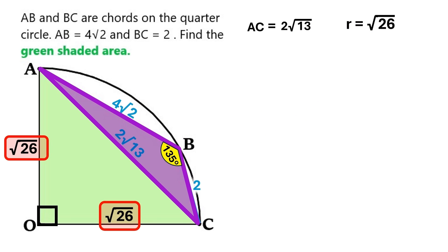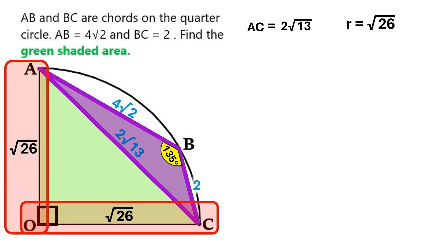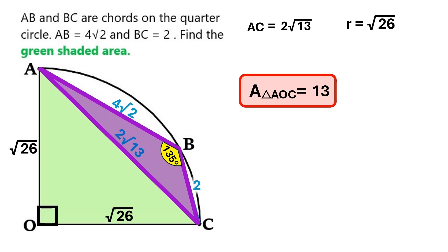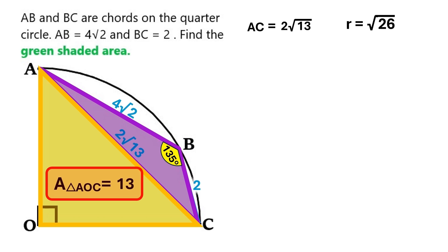Let's change the r's to root 26. And now, in this triangle AOC, the base is root 26 and the height is also root 26. That means we can easily calculate that the area of the triangle AOC is 13. Let's keep this super important finding down here.